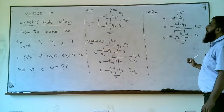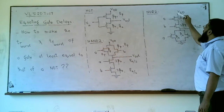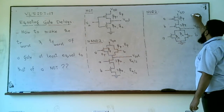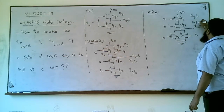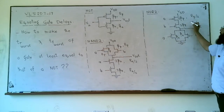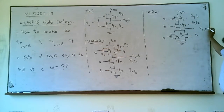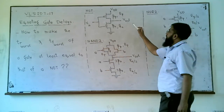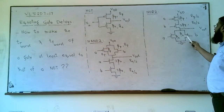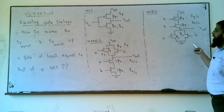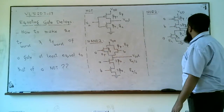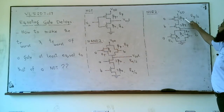Now for NOR2: to make its rise time delay equal to that of a NOT gate, since the two pMOS transistors are in series and VDD reaches the output only when both A and B are on, keeping both at beta_p gives 2r_p total — which is not what we want. So we use 2×beta_p for each pMOS transistor, reducing each to r_p/2. In series, r_p/2 plus r_p/2 equals r_p, matching the NOT gate. For the fall time delay, if either A or B is on that is the worst case, and only one r_n is in the path, equal to that of a NOT gate. So we can keep beta_n for the NMOS transistors.